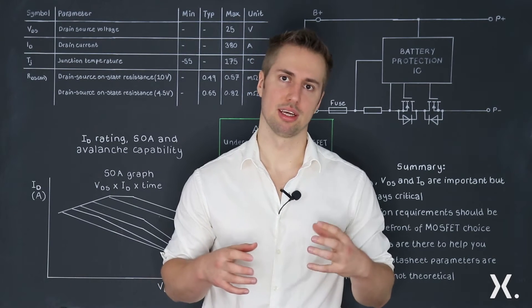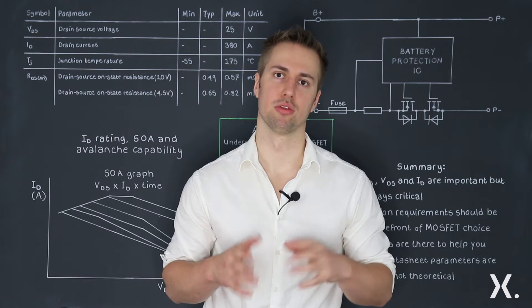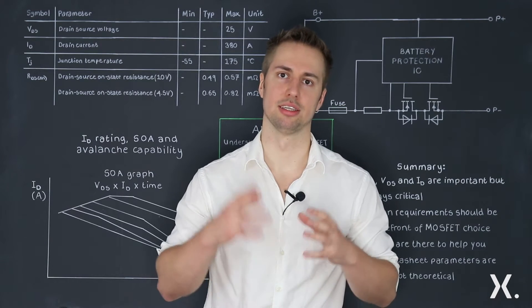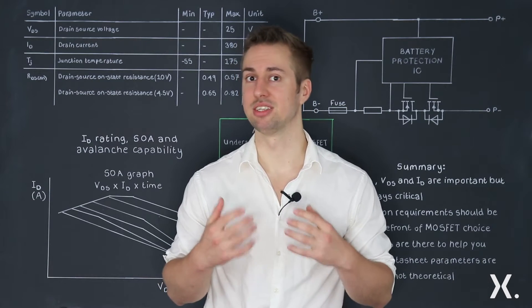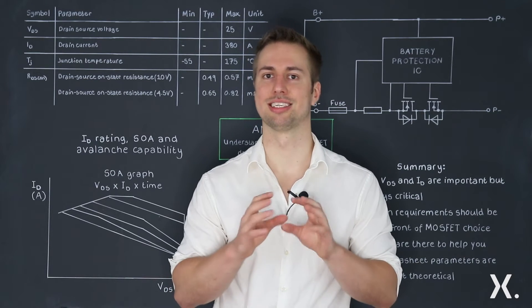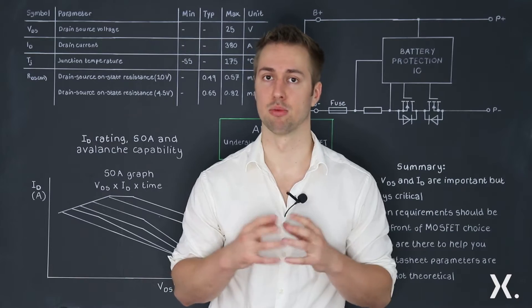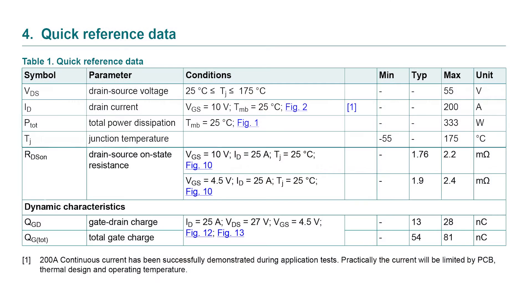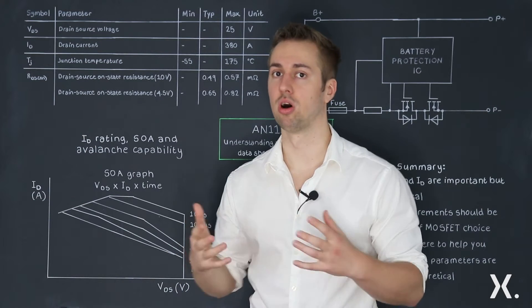When selecting a MOSFET, it often requires you to go through parametric tables and data sheets, and it can become very easy due to the sheer volume of power MOSFETs out there to start looking at a simple set of parameters to compare MOSFETs against. These parameters could be drain source voltage, drain current, and RDS on, which are parameters we've seen others use for selecting MOSFETs.